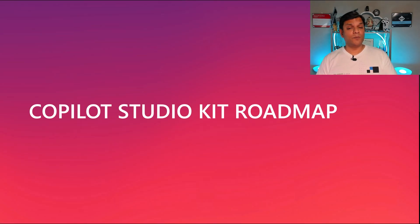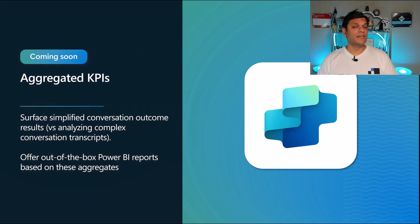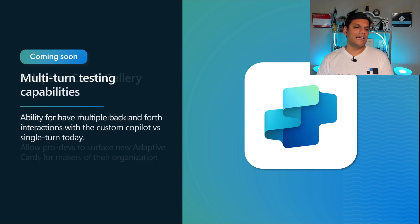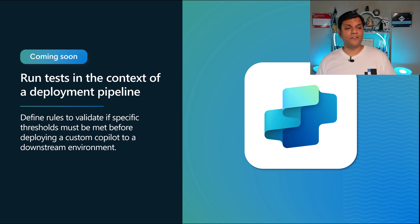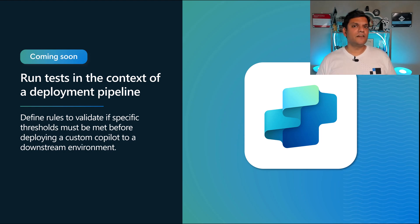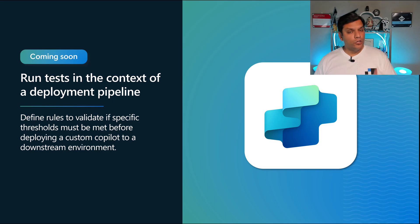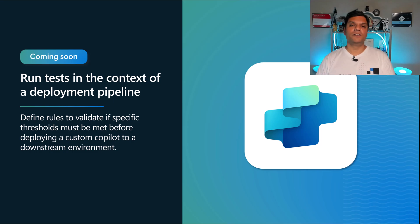They also talked about features coming up on the roadmap: aggregated APIs, adaptive card galleries, multi-turn testing capabilities for multiple back-and-forth interactions with the agents, and running tests in the context of a deployment pipeline. Really neat functionality. These are all the coming-soon features going into the Copilot Studio Kit, so keep an eye on them — once they are out, you'll need to update the Studio Kit, but all of it will be well worth your time.